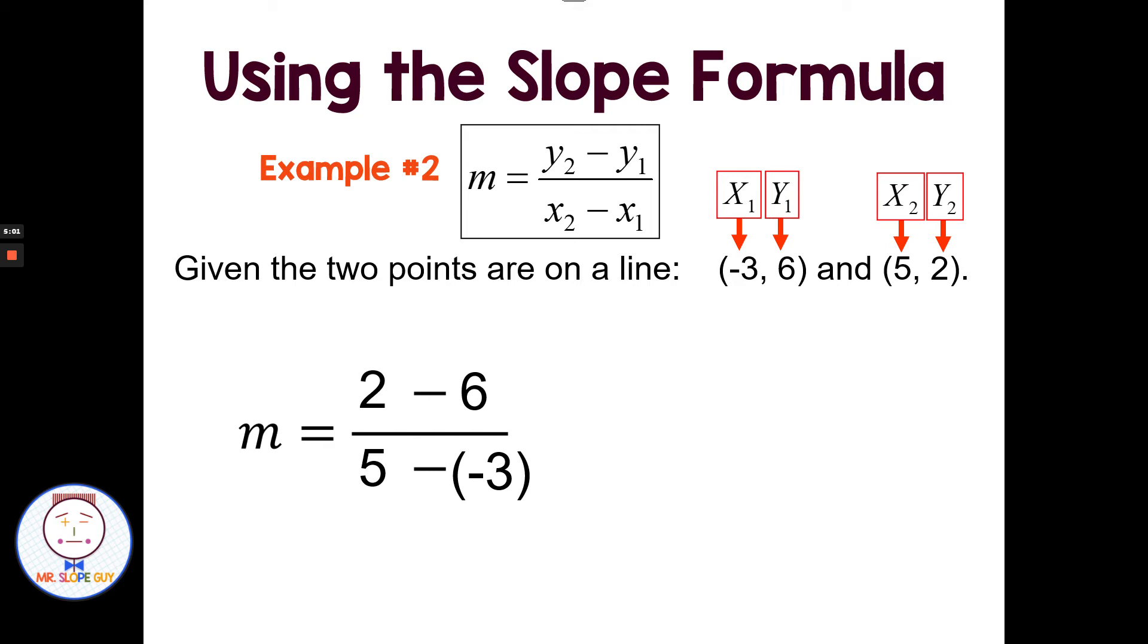Then I just have to work out my subtracting integers. 2 minus 6, or 2 plus -6, is -4. 5 minus -3 is the same as 5 plus 3, or 8. And -4/8 will reduce to -1/2. And I can write that negative sign on the top, the bottom, or just in front of the fraction.